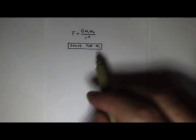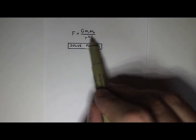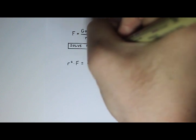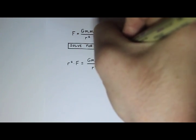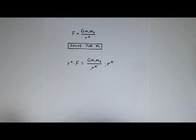Okay. So the first thing I can do is get rid of this r squared, and I can multiply both sides by r squared, since the r squared is divided here. So r squared times F equals G m1 m2 divided by r squared and then times r squared. And the reason I'm doing that is so I can cancel out the r squared.